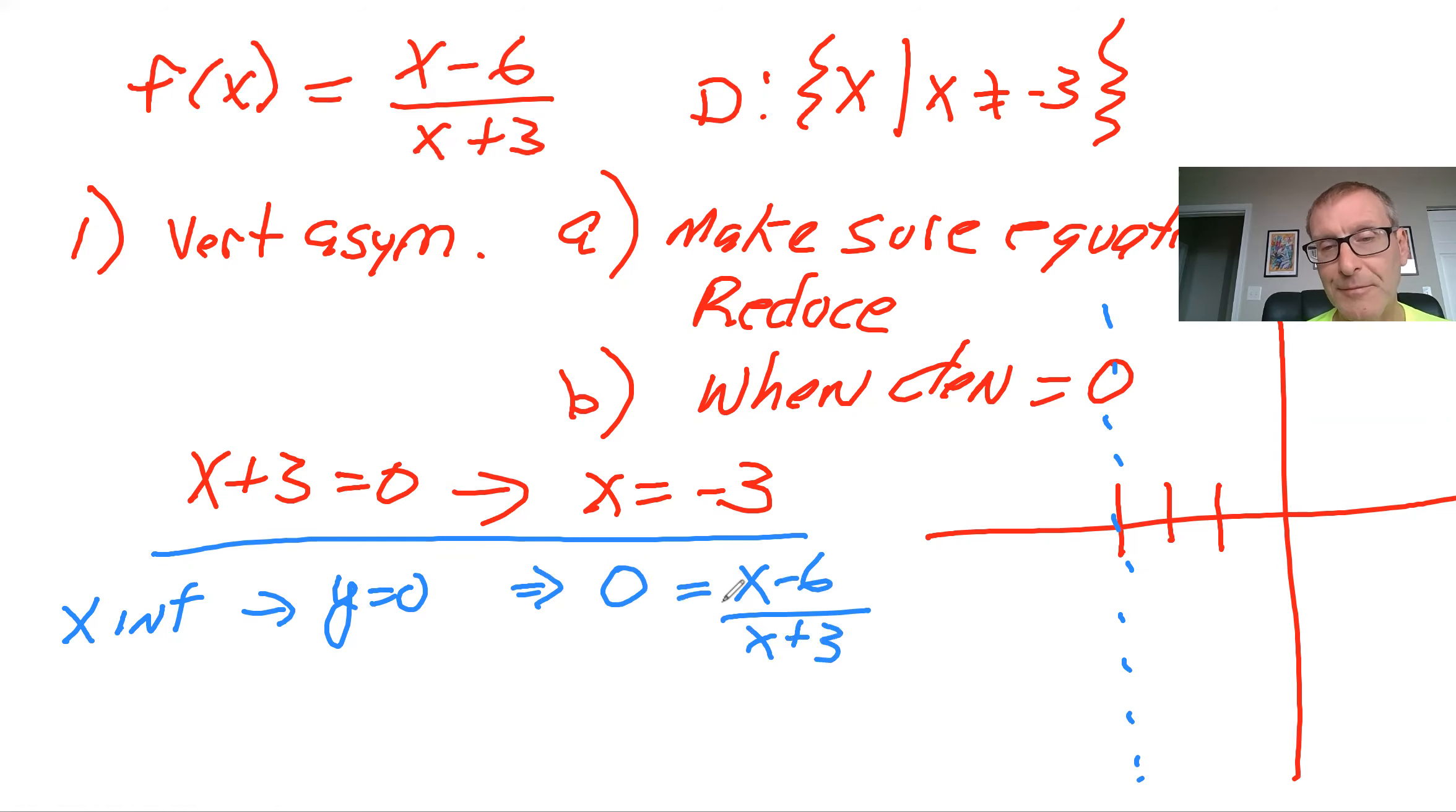And you want to say to yourself, the only way to make the fraction 0 is what? The numerator has to be 0. So when you solve for this, you would get X minus 6 equals 0. And you would see X equals 6.